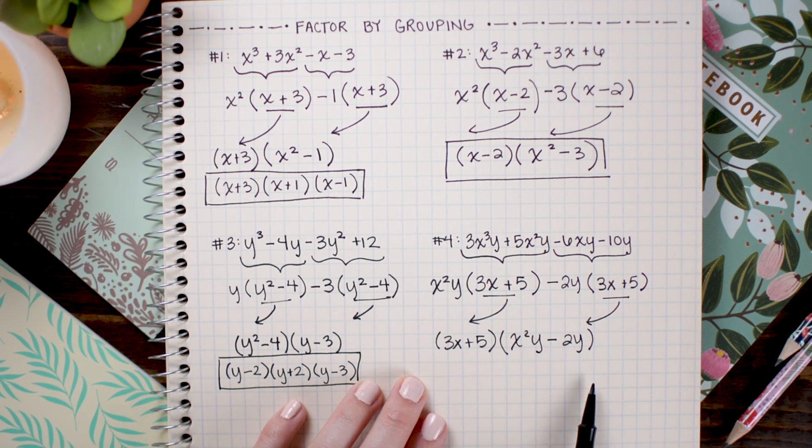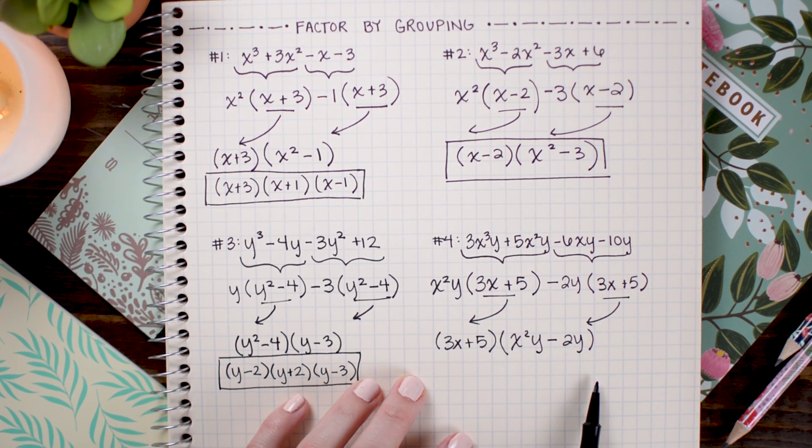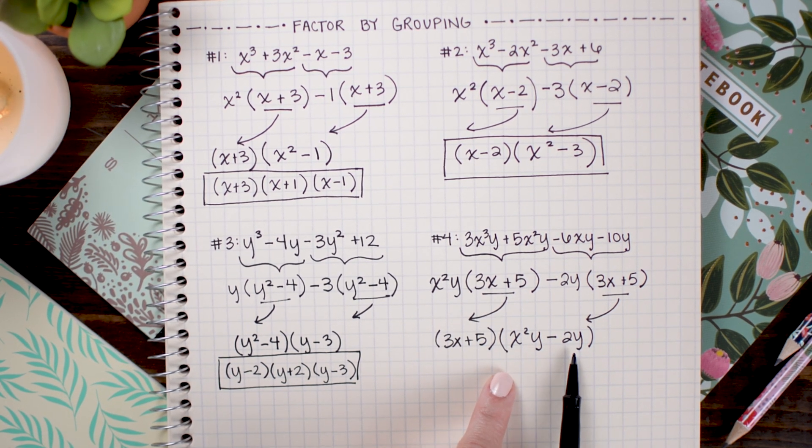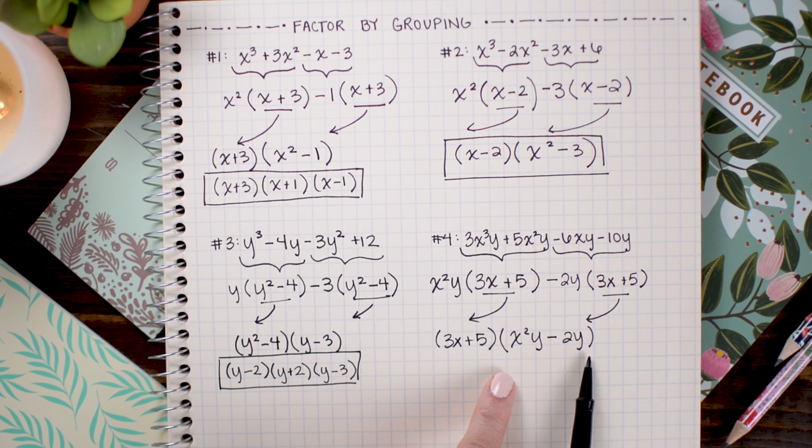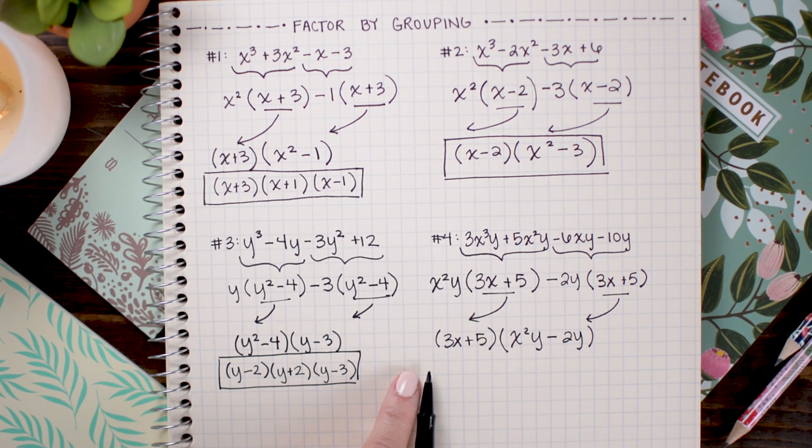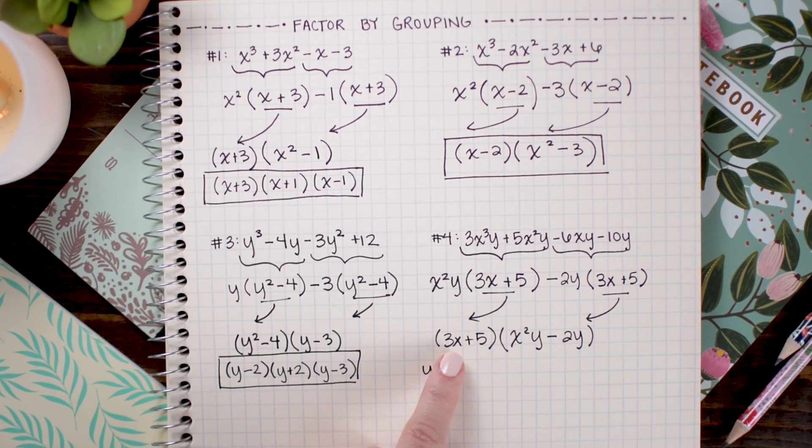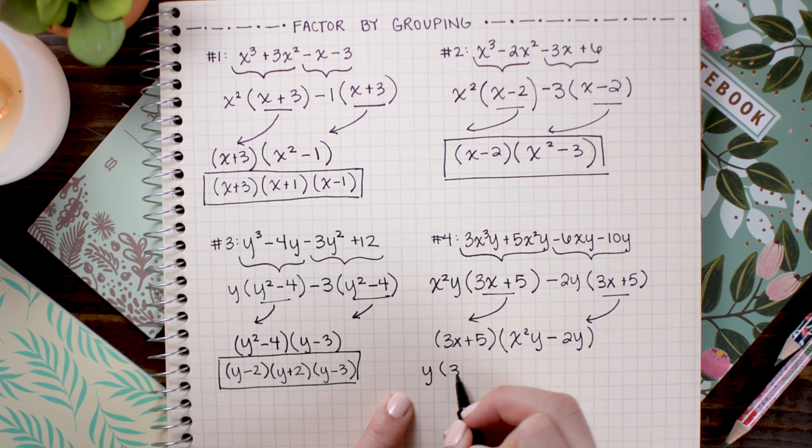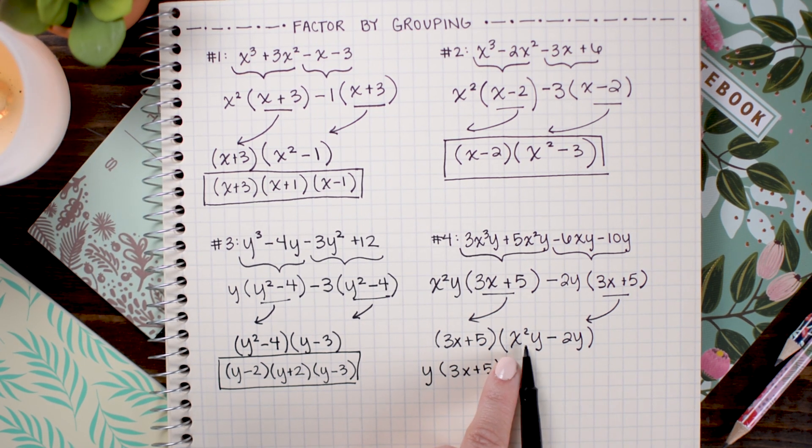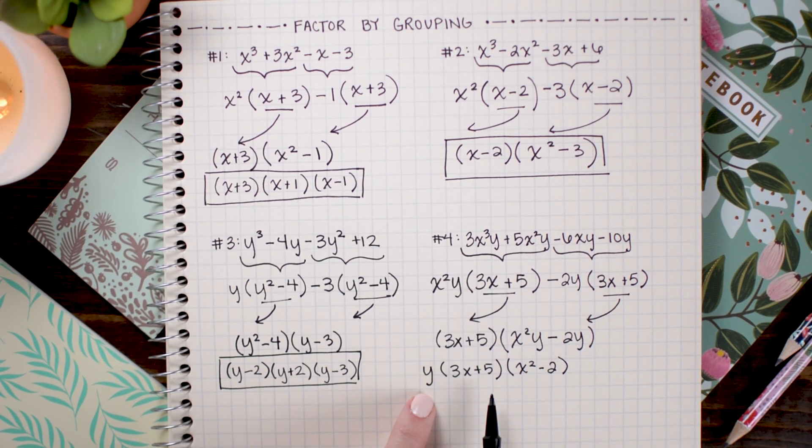Now, before we circle this as our final answer, we're just going to do a quick scan to make sure that I can't factor it any further. And when I do that, I see that in this second binomial, both of these terms have y's in it. So, I can pull out a common factor of y and because that will be multiplied with the 3x plus 5 as well, it's okay to just go ahead and pull it all the way out in front. So, I'm going to pull out the y and just write it out here in front. And then I have 3x plus 5 will remain the same. And then in this term, I'm just going to divide out the y's. So, I have x squared minus 2. And that is the fully factored form.